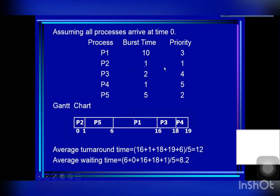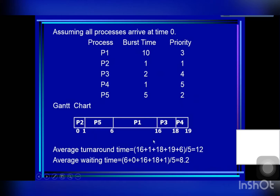At time zero, the smaller the number, the higher the priority. Because P2 has the highest priority, P2 is scheduled first to run on the CPU. Its burst time is one. After P2 terminates, we find that P5 has the highest priority. So the order is P5, then P1, then P3, then P4.